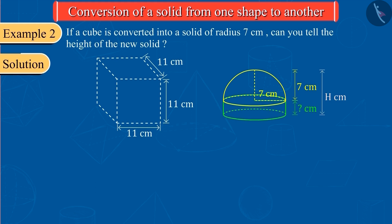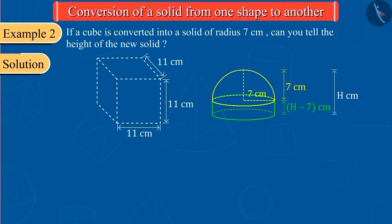Since the total height of the solid is H and the height of the hemispherical part is 7 cm, therefore, the height of the cylindrical part will be H minus 7. Can you guess the next step now?